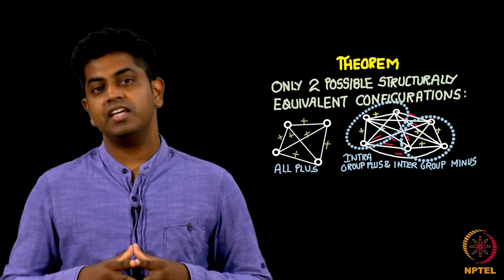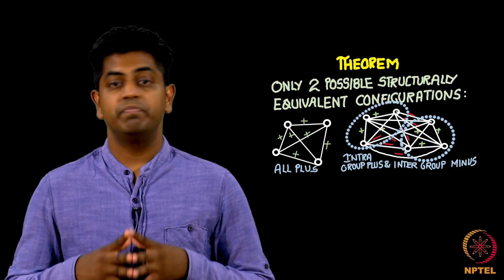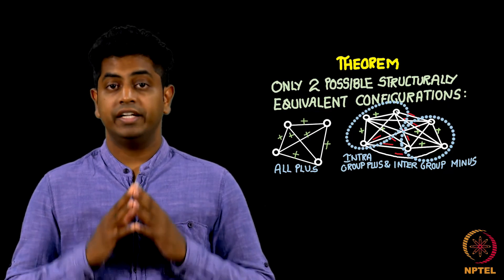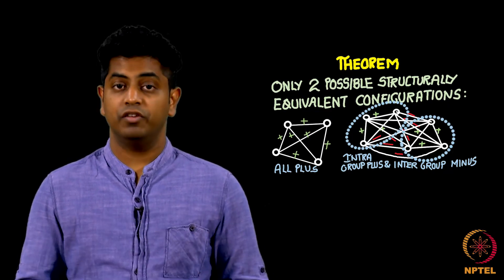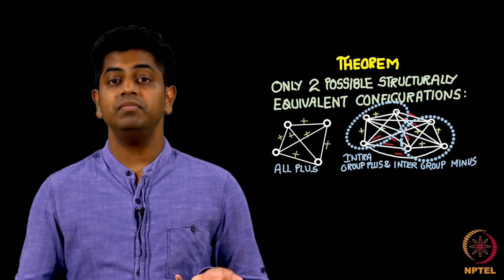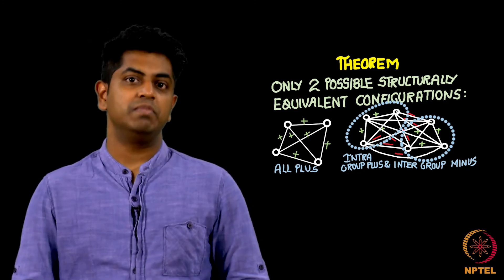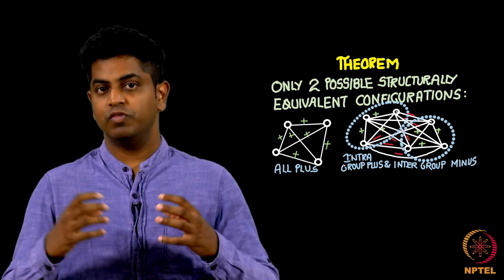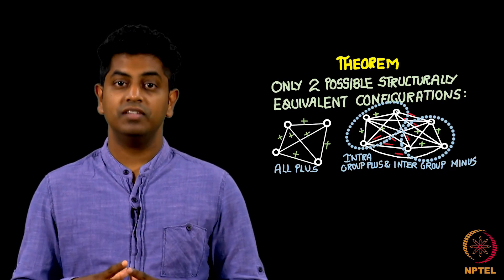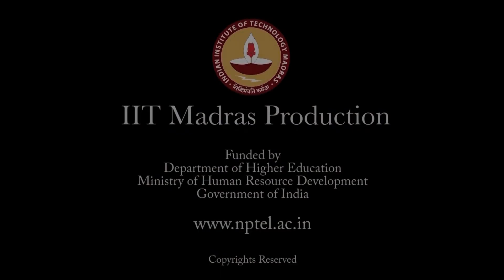That closes the theorem. The theorem states that if you have a structurally balanced network, it must be either Type 1 — all positive friendships within, there is only one team — or Type 2 — there are precisely two teams where friendships within are positive and friendships across are negative.